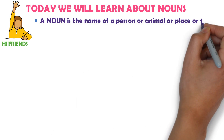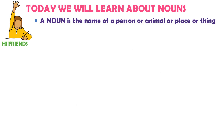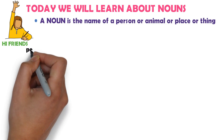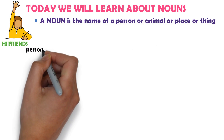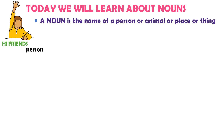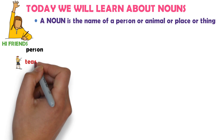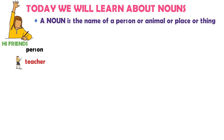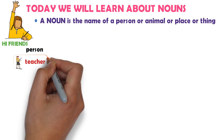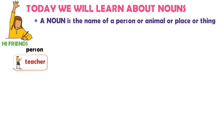Person example: Teacher is a name of a person, so teacher is a noun. Boy is a name of a person. Doctor is a name of a person. Father is a name of a person.